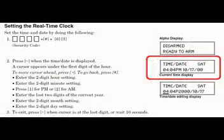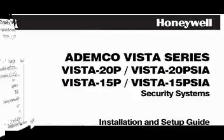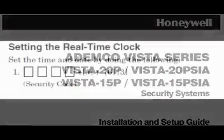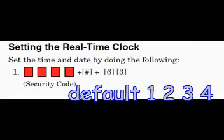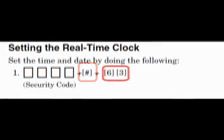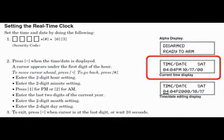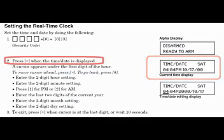First item on the list today: setting the real-time clock. The instructions for this are found in the installation manual. We enter our security code — default was 1234 — the pound sign, then the numbers 6 and 3. At this point, the keypad will show you the current time and date inside the computer. To make changes, start out by pressing the asterisk button.